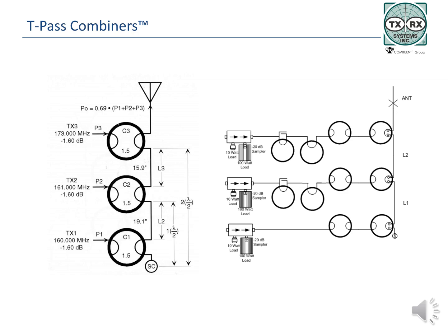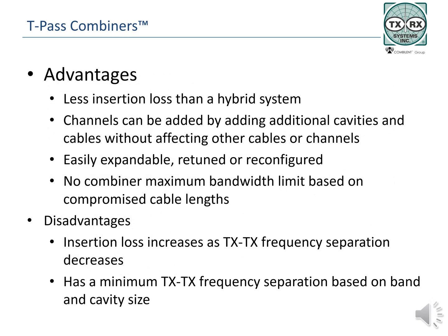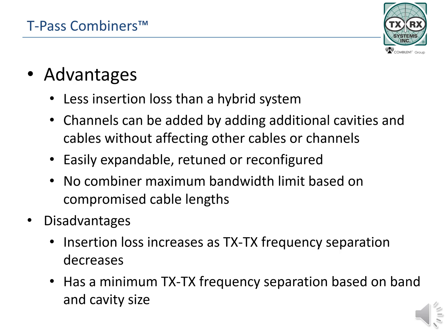Insertion loss or combiner loss will be dependent upon how many cavities are used and how much isolation is required. TXRX TPAS combiners offer advantages over other combiner types. TPAS combiners have lower insertion loss than hybrid combiners. Channels can be added by adding cavities and cables without changing the entire combiner, as in star junction combiners. TPAS combiners are easily expanded, retuned, or reconfigured, and TPAS combiners have no maximum total combiner bandwidth limit, as star junctions do.